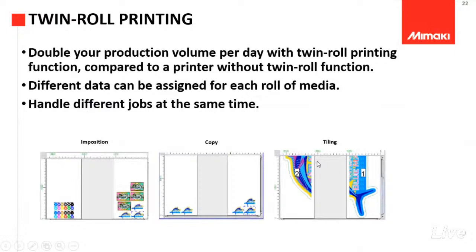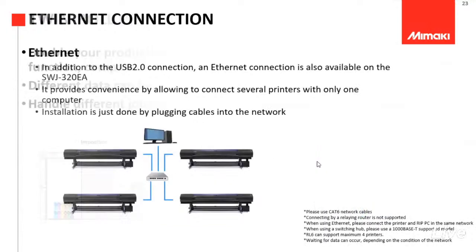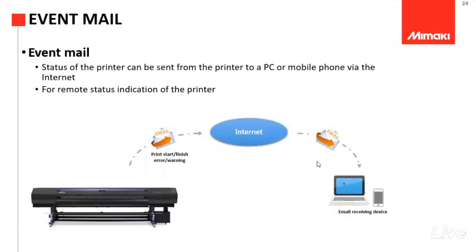Untuk fitur-fiturnya, ini fitur standar untuk mesin-mesin outdoor maupun indoor. Jadi ada imposition, ada copy, ada step repeat, ada tiling untuk gambar yang memang besar. Kelebihan lainnya dia bisa menggunakan kabel ethernet dengan catatan menggunakan kabel ethernet LAN Cat 6 — kalau Cat 5 ke bawah itu tidak bisa. Kita bisa mengoperasikan melalui jaringan dan mengatur beberapa printer menggunakan satu komputer atau beberapa sesuai kebutuhannya.